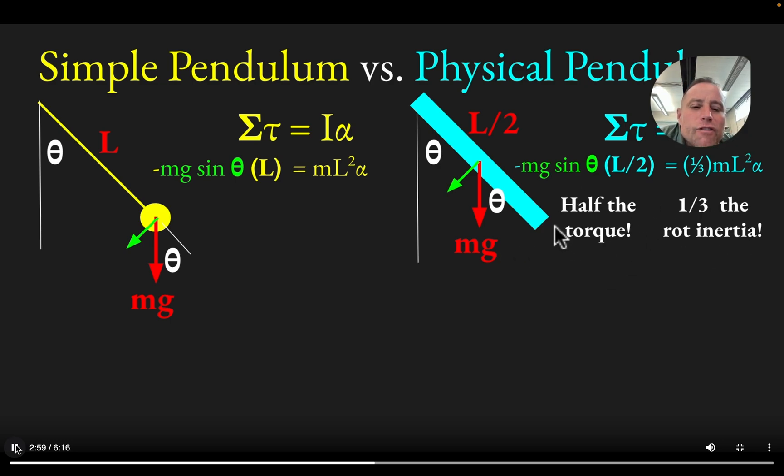So if both of these effects were, say if it had half the torque and half the moment of inertia, then the period of oscillation would be the same for both physical pendulum and simple pendulum, but because the torque goes down by a factor of two, but the moment of inertia goes down by a factor of three, even more, that means that this thing is going to swing back and forth faster than the simple pendulum.